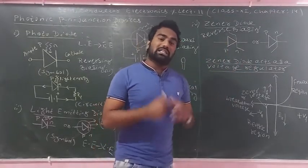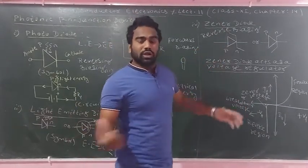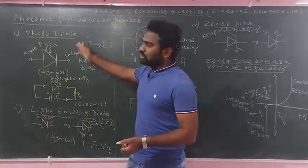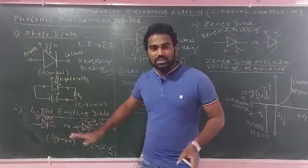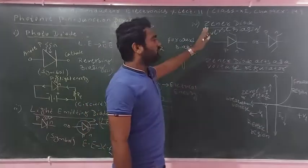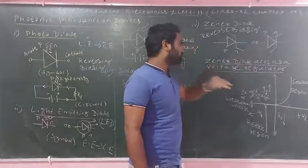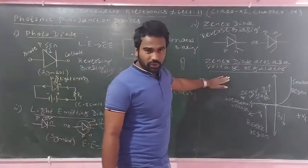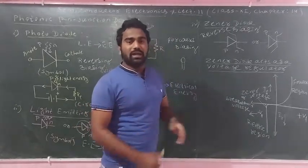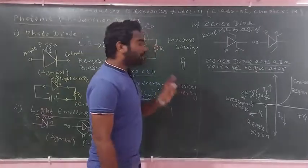That means the reverse voltage does not break the device. It works on the principle of reverse biasing; however, it can withstand a large reverse voltage without damage. The Zener diode acts as a voltage regulator, the transistor acts as an amplifier, and the PN junction diode acts as a rectifier. We use the Zener diode as a PN junction device for voltage regulation.